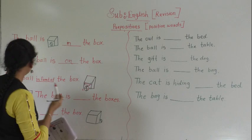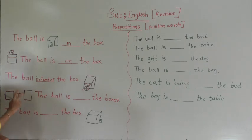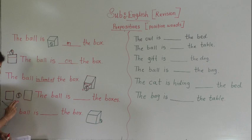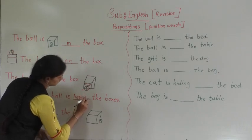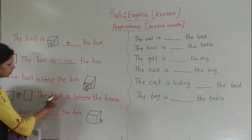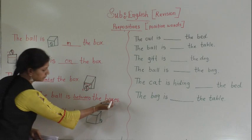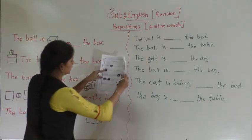Next, check this. The ball is dash the boxes. There are two boxes and you have to find the position of the ball. Where is the ball? Between. The ball is between the boxes. There are two boxes. Write down: between.